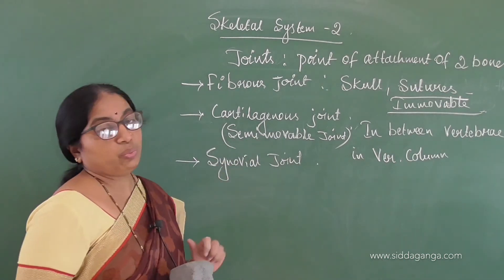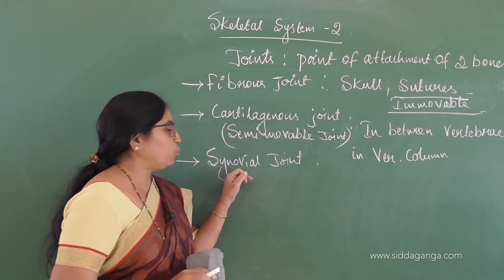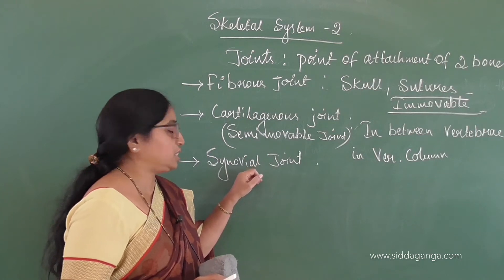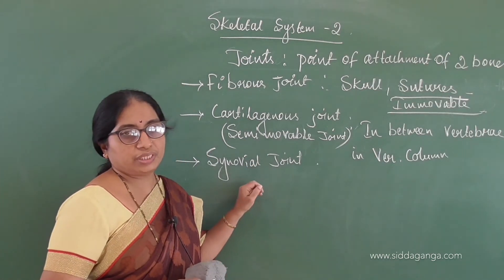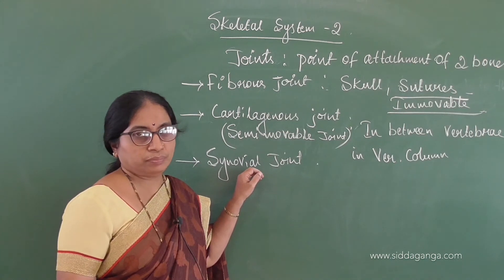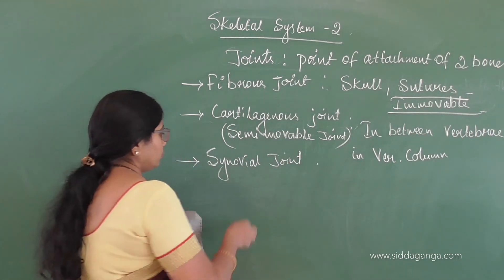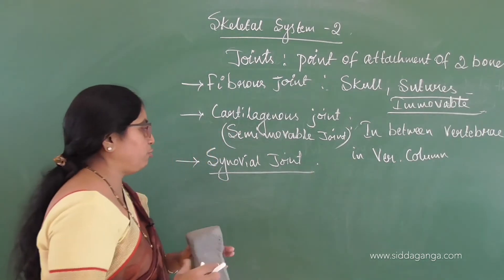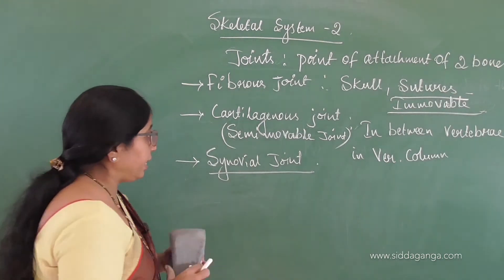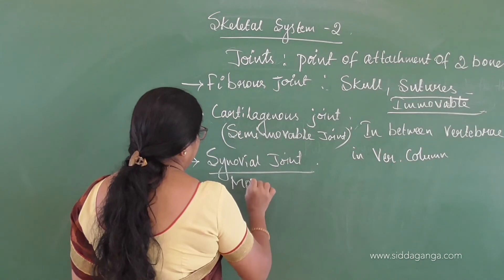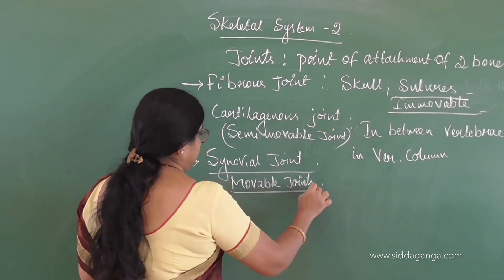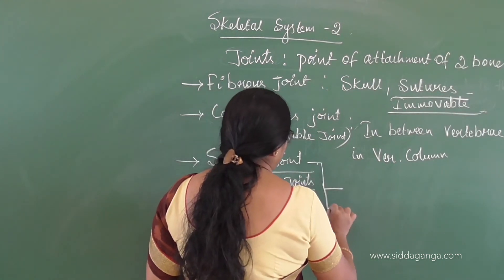Now coming to synovial joints. The characteristic of synovial joints is that they have a cavity called the synovial cavity, which is filled by a fluid called the synovial fluid. This fluid acts as lubrication, helping the easy movement of the two bones. Therefore, synovial joints are movable joints.